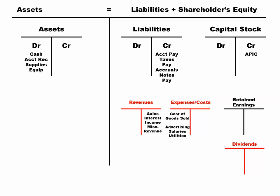Our expenses and costs — our main cost account is cost of goods sold, which is how much it costs for the things that we actually sold. Different expenses include advertising, salary, and utilities, which is what we would expect. We're also going to have some contra accounts — those accounts that reduce related accounts — and we'll talk about the sales one in a little bit.